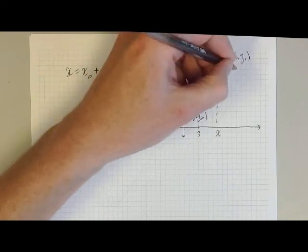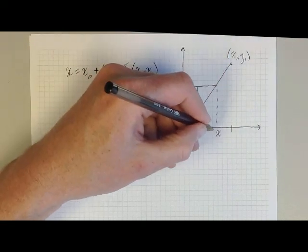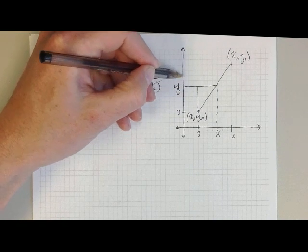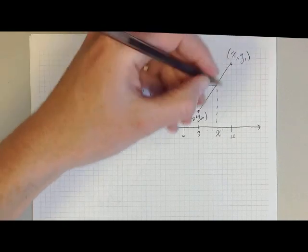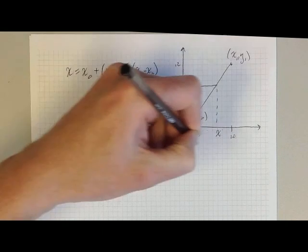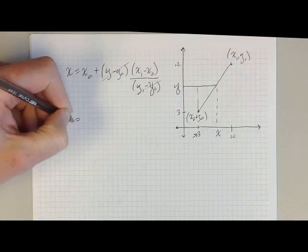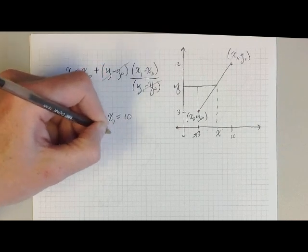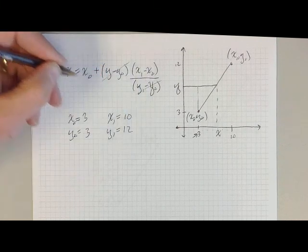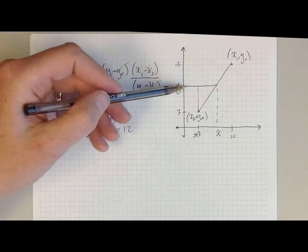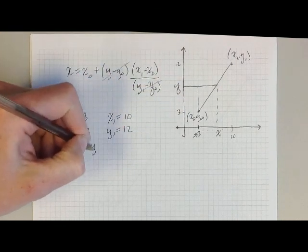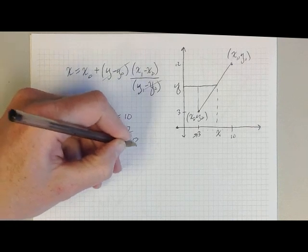So this is 3, that's 3. This is about 10, and this is about 12. We have x0 equal to 3, y0 equal to 3, x1 equal to 10, y1 equal to 12. The value of y here is 8, and we want to know the value of x.